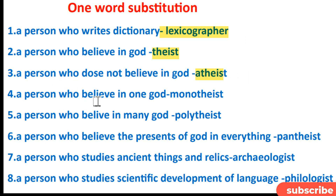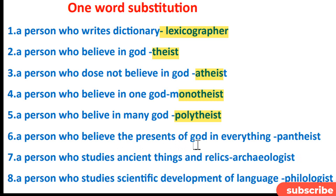A person who believes in one god is a monotheist. A person who believes in many gods is a polytheist. A person who believes in the presence of god in everything is a pantheist. A person who studies ancient things and relics is an archeologist.